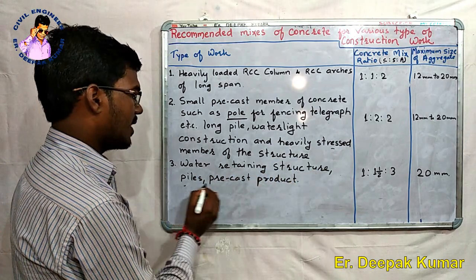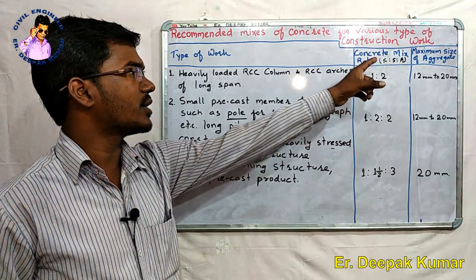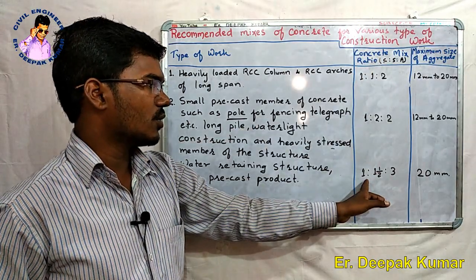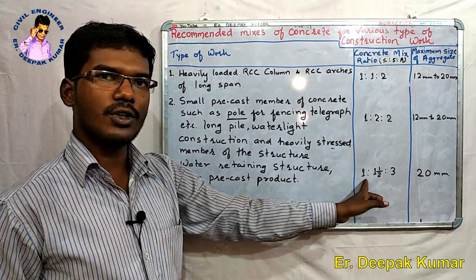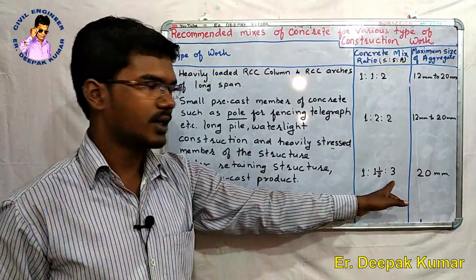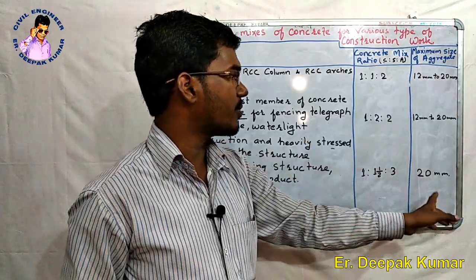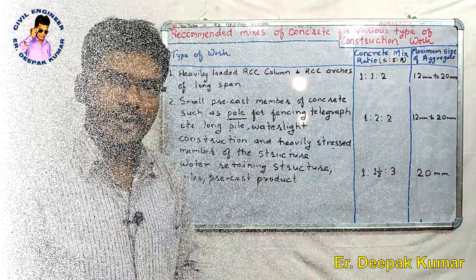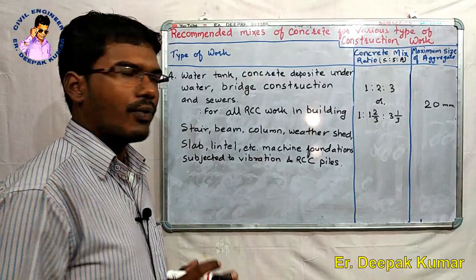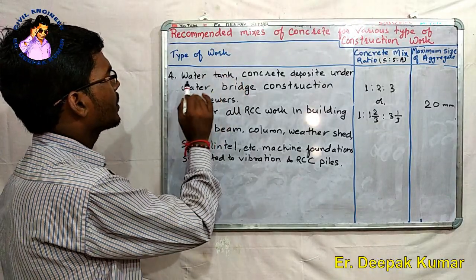The third type is water-retaining structures, piles, and precast products. The concrete mix ratio is 1:1.5:3, and the maximum size of aggregate is 20mm.